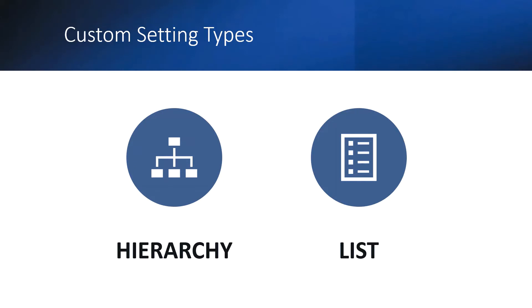The first type is hierarchy. As its name suggests, if you want to show a specific set of values to a particular user and a different set of values to another user for the same field, then you can use the hierarchy custom setting type. If you want all users in the org to see the same data, irrespective of their profile or role, then you can use the list type.